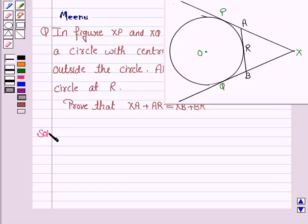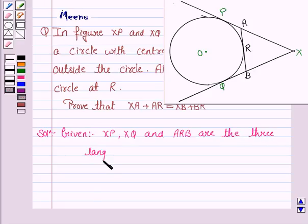So let us now move on to the solution. Let us first write what is given to us. XP, XQ, and ARB are the three tangents to the circle.